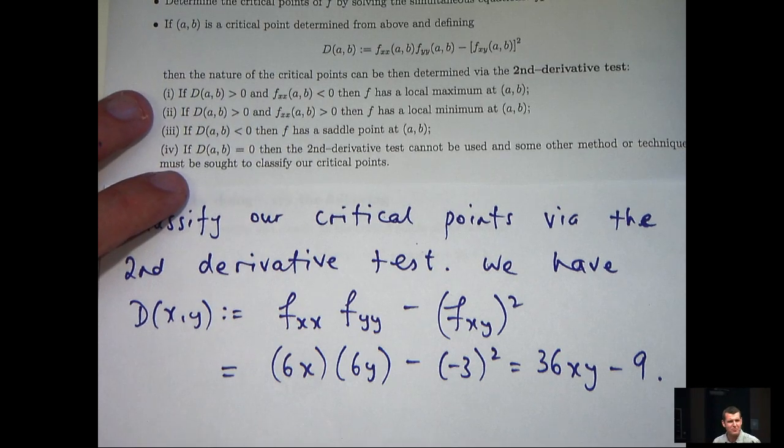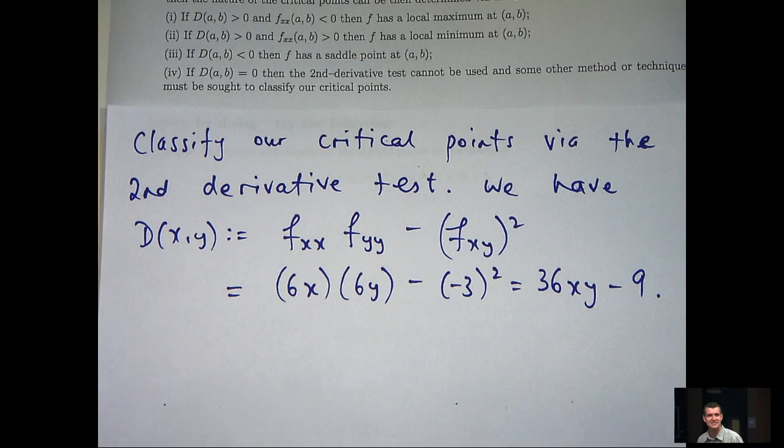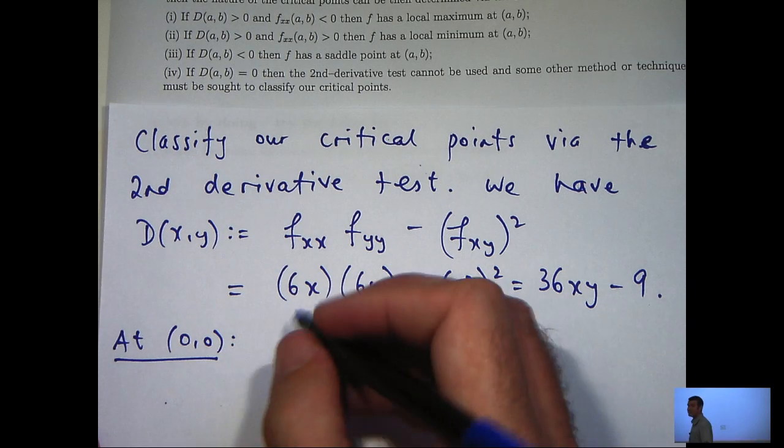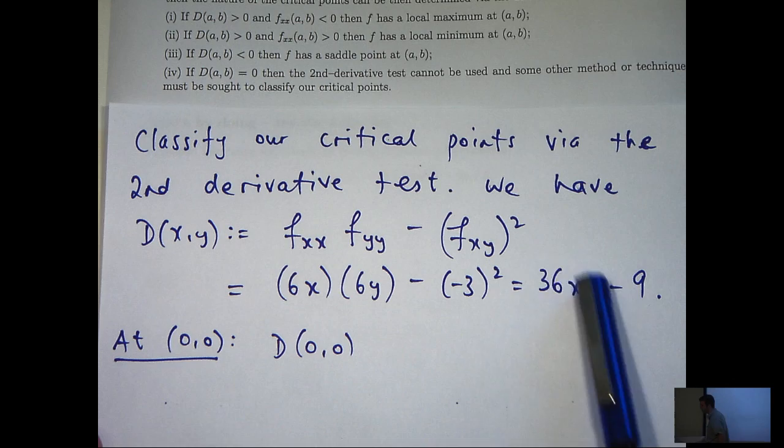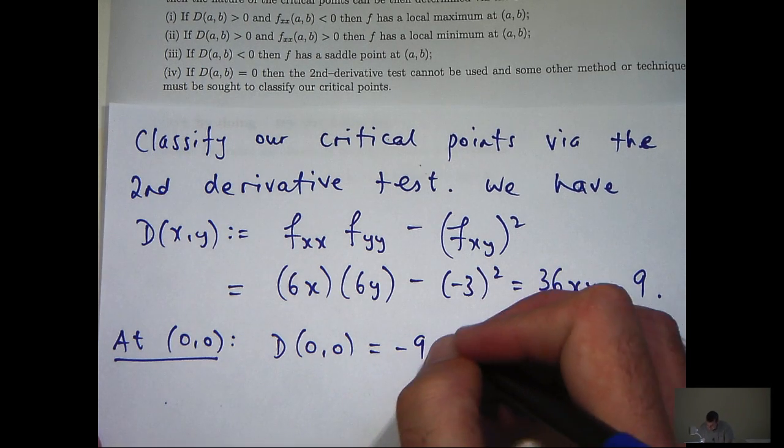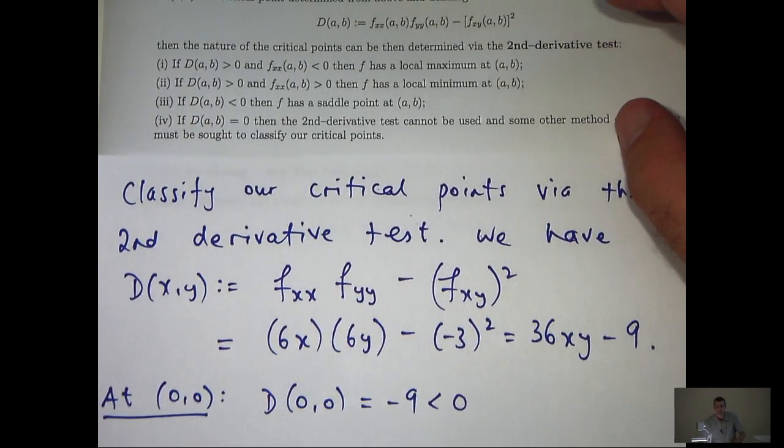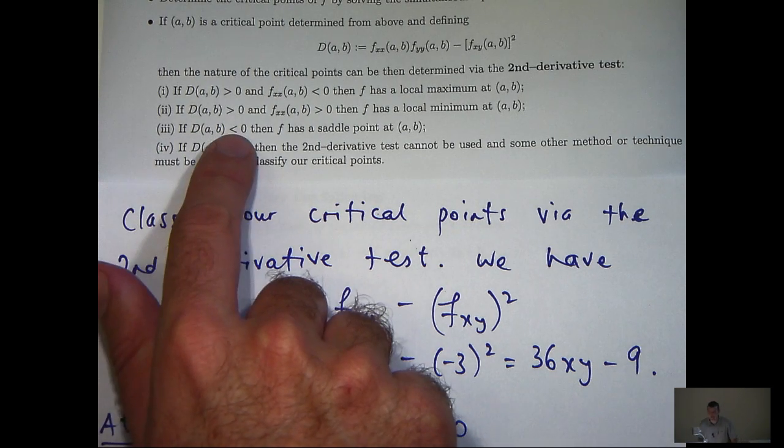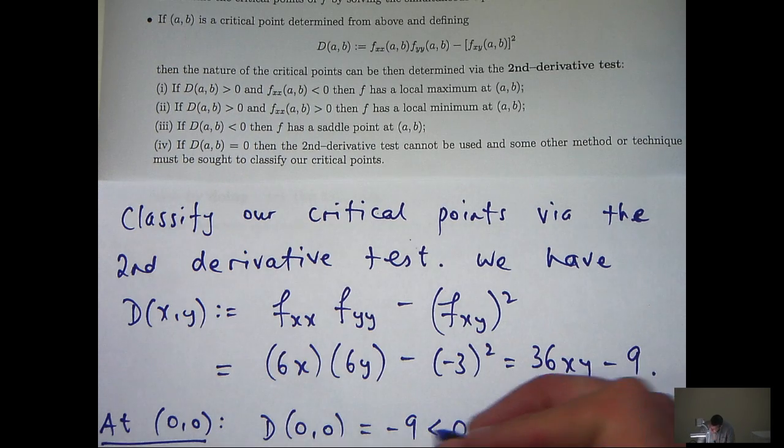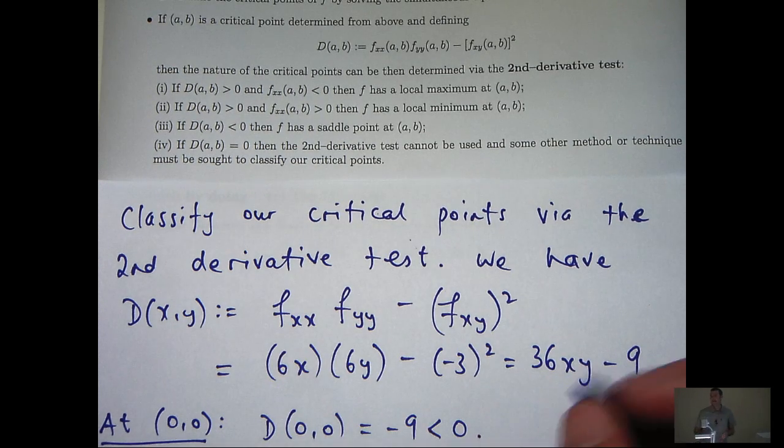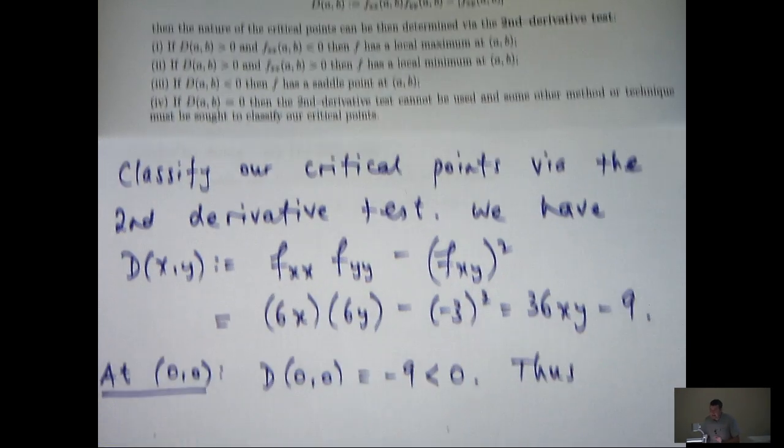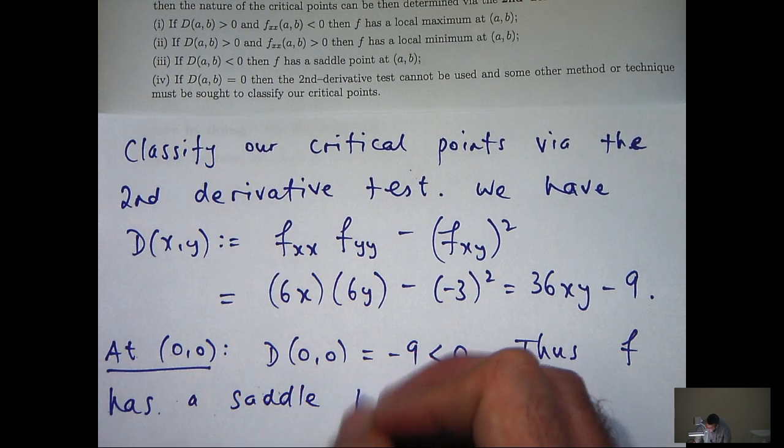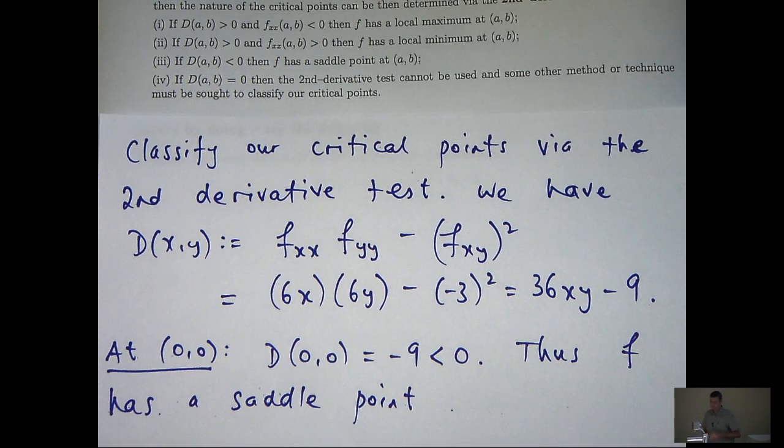So let's go to our first critical point (0, 0) and test this d. So if I sub in x equals 0, y equals 0, I'll get 0 here and I'll get minus 9. Now that's negative. So let's go to our second derivative test and see if we can make some conclusion. If we look at part 3 here, if this d is negative then f has a saddle point. So we conclude that f has a saddle point, which is kind of like a general point of inflection.